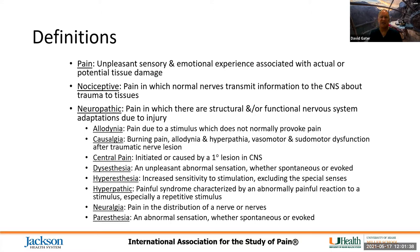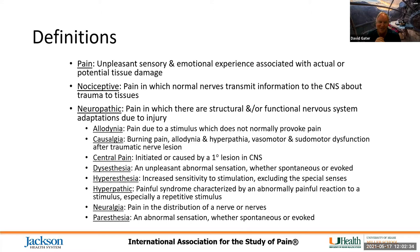Of pain, there are two major types. There is nociceptive pain, in which normal nerves are transmitting information to the central nervous system about trauma to tissues, and then neuropathic pain, in which pain is due to structural or functional nervous system adaptations because of injury. Within neuropathic pain there are several different types. Allodynia is pain due to a stimulus which does not normally provoke pain — for example, when you hit your funny bone or ulnar nerve at the elbow. Causalgia is a burning pain that includes allodynia as well as hyperpathia, vasomotor, and sudomotor dysfunction after traumatic nerve lesion — also referred to in older days as reflex sympathetic dystrophy.